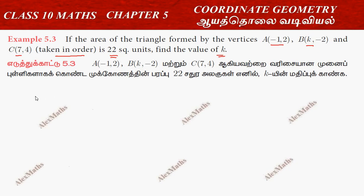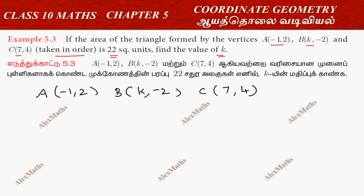So the points we have are: A is (−1, 2), B is (K, −2), and C is (7, 4). We label these as x1, y1, x2, y2, x3, y3 respectively.